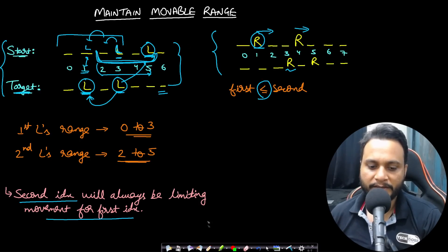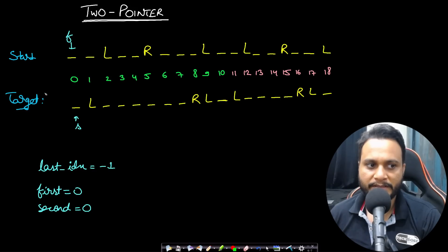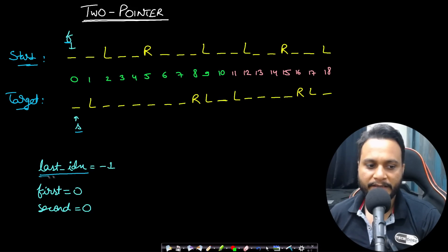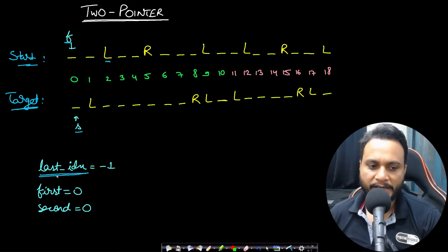Now let's look at a dry run using the two-pointer approach. We have pointer F on start and pointer S on target. We define a 'last index' which tracks the last position in target where we saw an L or R — initialized to minus 1, since we haven't seen anything yet.